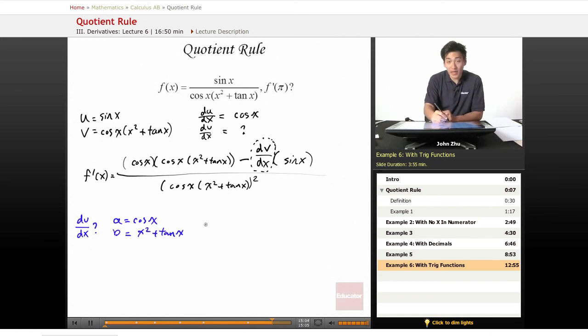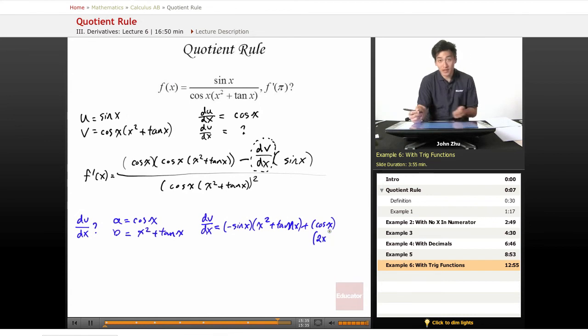So by applying the product rule, we know that the derivative of v equals derivative of a, which is negative sine of x times the second portion b, plus a times the derivative of b, which we can apply with a trig definition of derivatives and the power rule. So 2x plus the derivative of tangent of x, and if we can remember that's secant squared of x.